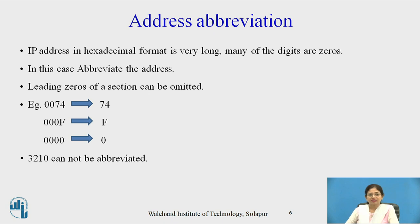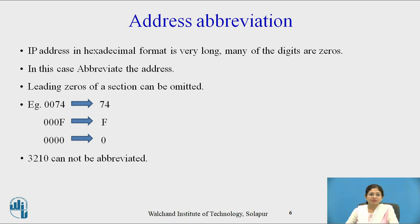Now the new term is address abbreviation, which is provided by IPv6. IP addresses in hexadecimal format are very long, and many of the digits are zeros. So in this case, abbreviation of the address is used. Leading zeros of the sections can be omitted — for example, if the address is 0074 then it is represented as 74. Another example: if the address is 00F then it is represented by F, with the three leading zeros omitted.